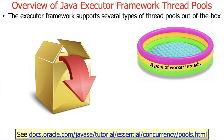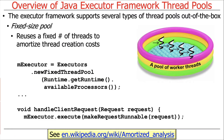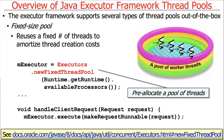The Java Executor Framework supports several types of thread pools out of the box. A fixed-sized thread pool has a fixed number of threads, as the name suggests. They are pre-spawned and reused by worker tasks to amortize the creation cost of threads. There's a factory method in the Executors utility class called NewFixedThreadPool, which creates and pre-allocates a pool of threads.